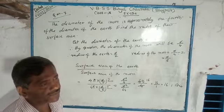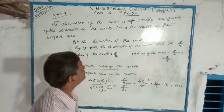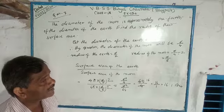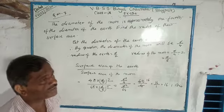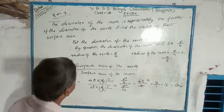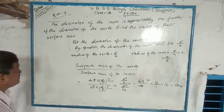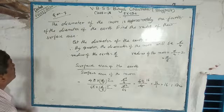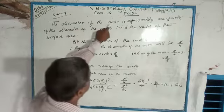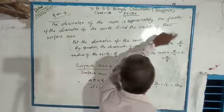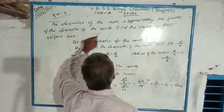Class 9 Mathematics. Surface area topic. Question number 7: The diameter of the moon is approximately one fourth of the diameter of the Earth.